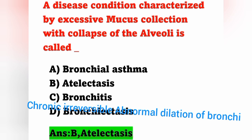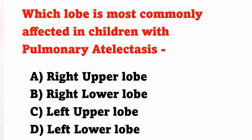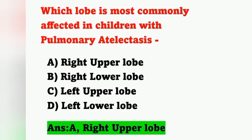Next question: which lobe is most commonly affected in children with pulmonary atelectasis? Options: option A right upper lobe, option B right lower lobe, option C left upper lobe, option D left lower lobe. In children with pulmonary atelectasis, the right upper lobe is most commonly affected. Option A is the correct answer.